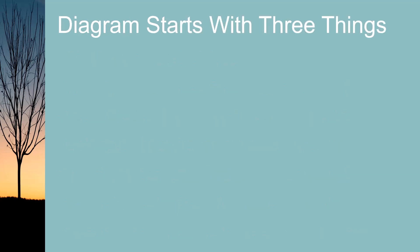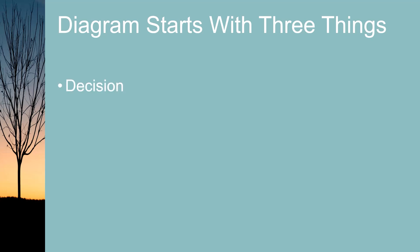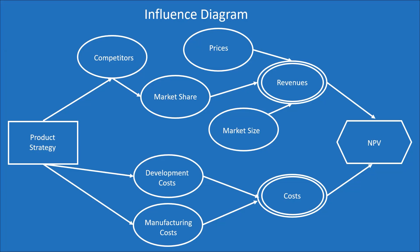The process of building an influence diagram often starts with a person or group defining three things: the decision, the factors in the decision (which are the uncertainties in the diagram), and the value or criteria used to assess the outcome. These items are placed in shapes that represent their function in the decision-making process — they are the nodes in the diagram.